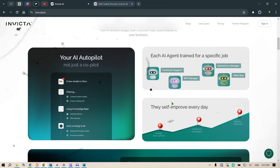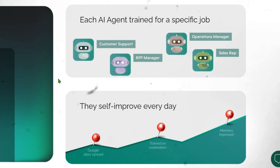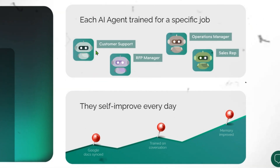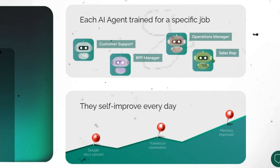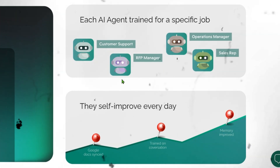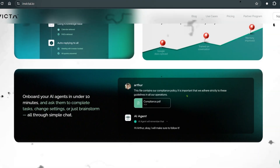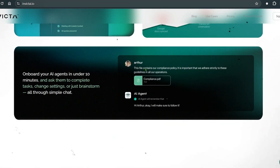We can create different agents. One failure we see is giving agents too much freedom — every agent can use sub-agents or other agents to do work. For example, we have a customer support agent, RFP manager, operations manager, and sales rep. Each AI agent is trained for a specific job and we want it to focus on that particular work only, giving more control and exact responses.